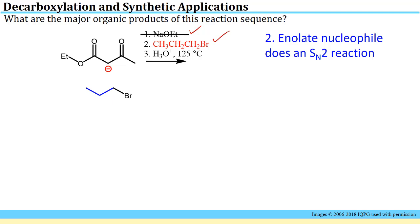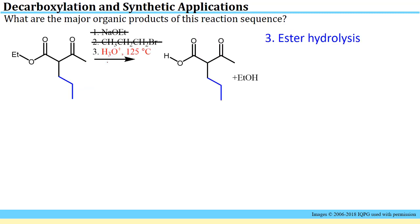Step two uses bromopropane. The enolate acts as a nucleophile in an SN2 reaction with that primary alkyl bromide, adding a three-carbon chain to the alpha carbon. The product now has those three new carbons, shown in blue, carried through from the alkylation step. So step one makes the enolate, and step two provides the substrate for the SN2 reaction.